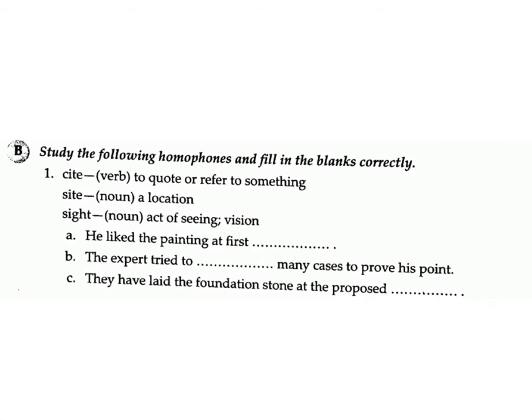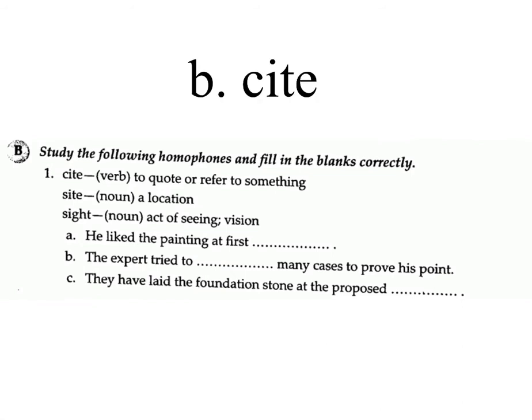Exercise B: Study the following homophones and fill in the blanks correctly. 1. Cite (verb) = to quote or refer to something; site (noun) = a location; sight (noun) = act of seeing or vision. (a) He liked the painting at first — answer: sight. (b) The expert tried to — many cases to prove his point — answer: cite.